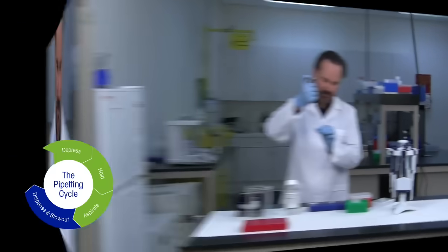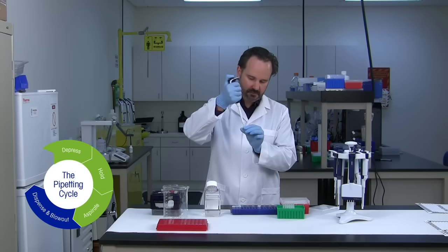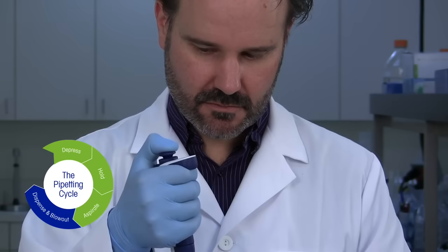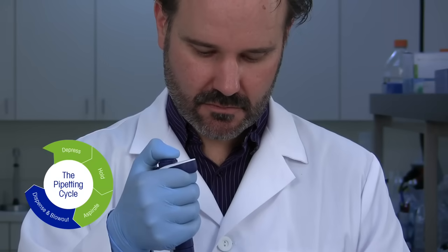Step 4, called blowout, expels any sample remaining in the tip. Push the plunger past the first stop to the second or bottom stop.